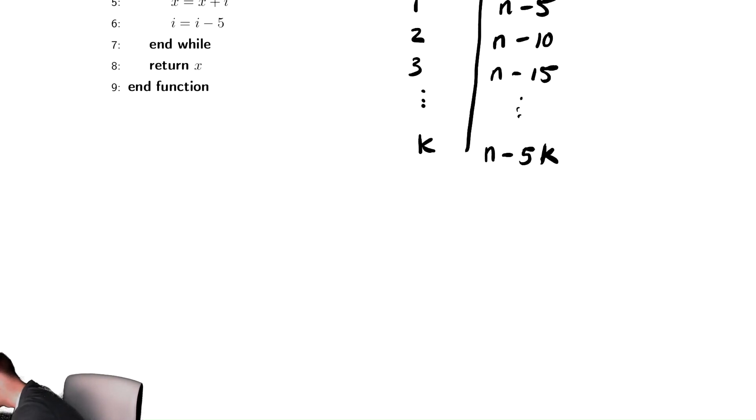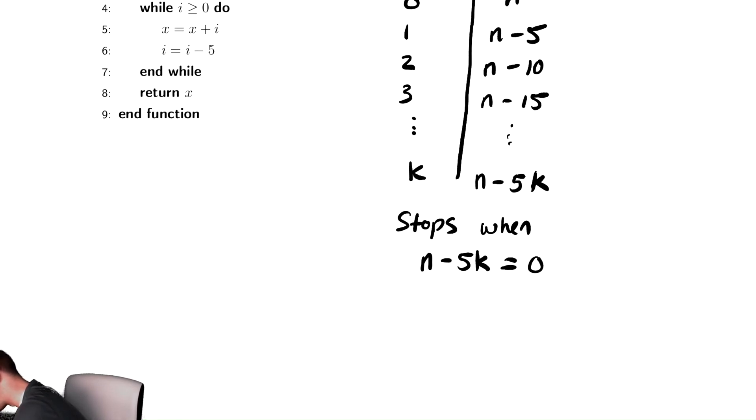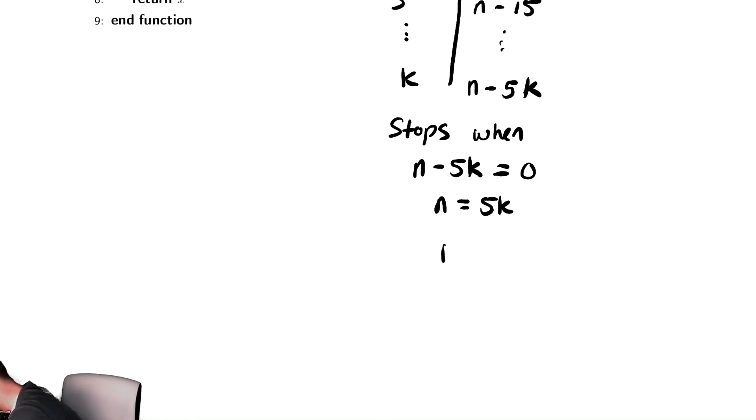So we need to find out when does that equal the stopping condition. So this stops when that expression that I have for i is equal to the stopping condition. Again, this is just an approximation, because we don't want to keep track of those fiddly details about the floors and adding one maybe because of the exact inequalities that show up. This is a very close approximation to the value of k. So n minus 5k is equal to 0, which means n equals 5k, divide by 5, and we get k equals n divided by 5.